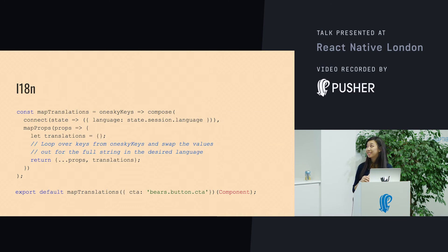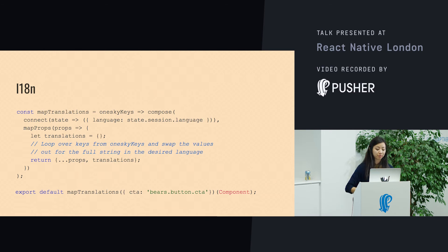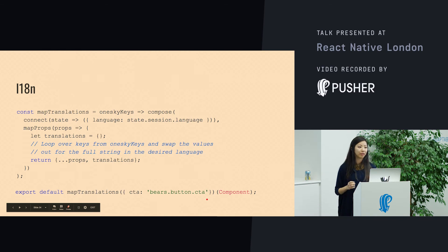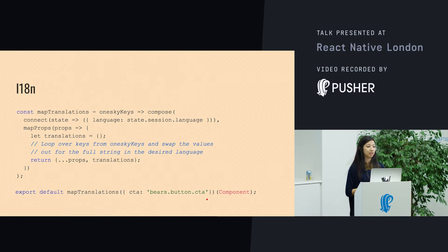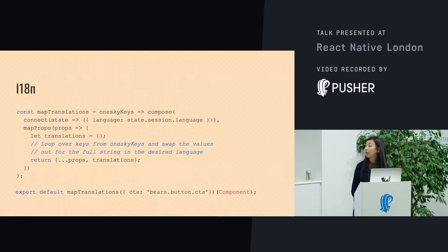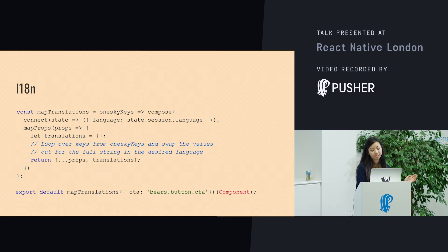You can use it for internationalization. We use a service called OneSky that holds a bunch of keys, like "bears.button.cta". You pass it a language, and then OneSky will give us the translated string in that particular language. You can use a higher-order component to map the key with the string and then pass it to the component.